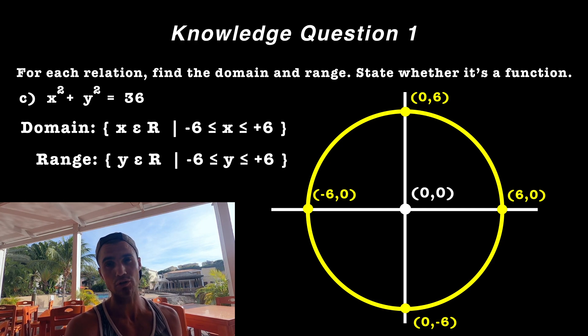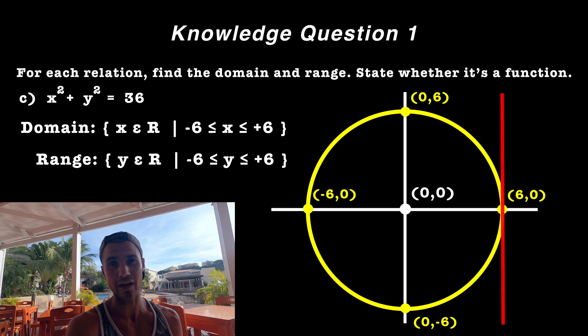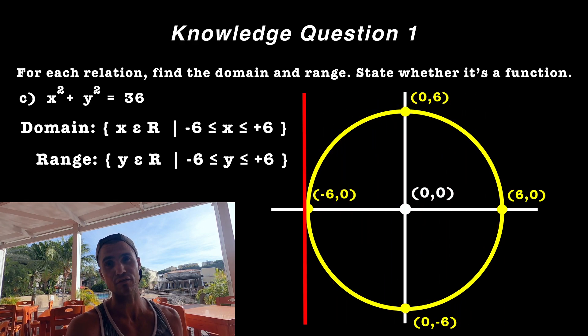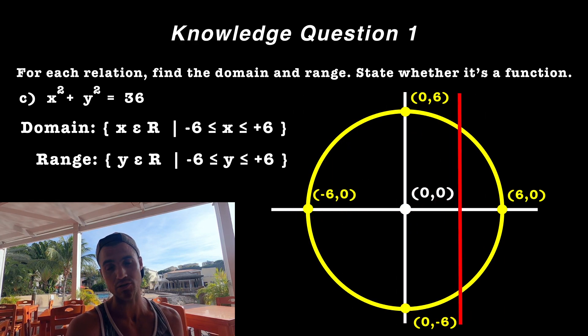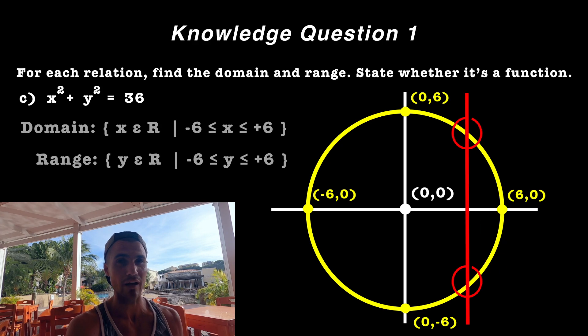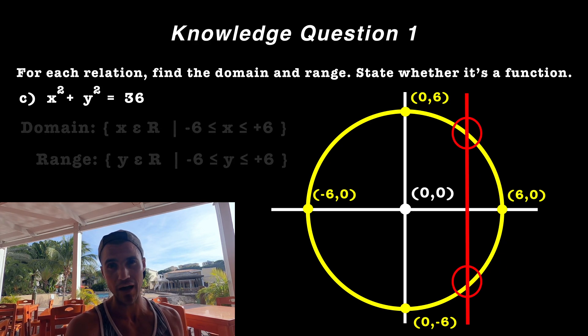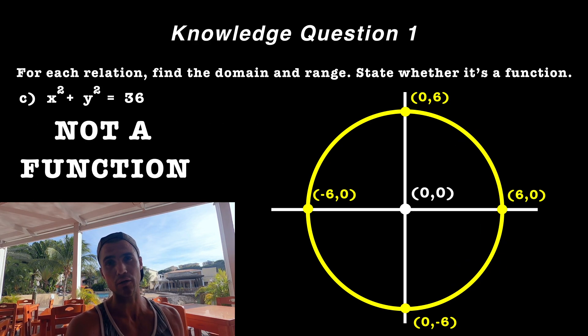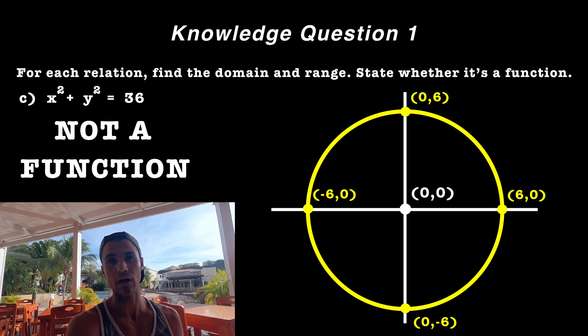Now is this going to be a function or not? Well, if we run the vertical line test through it, notice it's going to fail at a bunch of points. There's going to be multiple y values for single x values, hence the relation is not going to be a function.